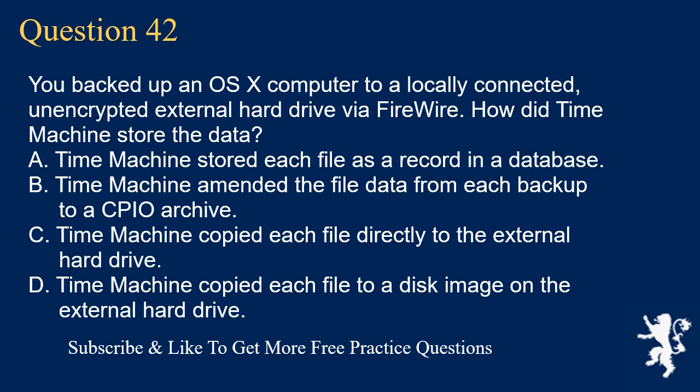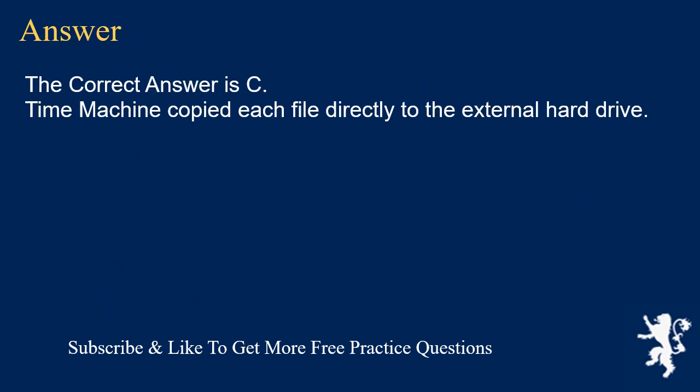Question 42. You backed up an OSX computer to a locally connected, unencrypted external hard drive via FireWire. How did Time Machine store the data? A. Time Machine stored each file as a record in a database. B. Time Machine amended the file data from each backup to a CPIO archive. C. Time Machine copied each file directly to the external hard drive. D. Time Machine copied each file to a disk image on the external hard drive. The correct answer is C: Time Machine copied each file directly to the external hard drive.